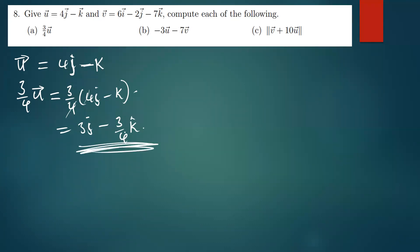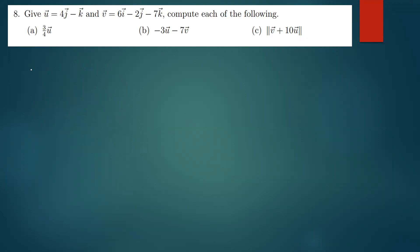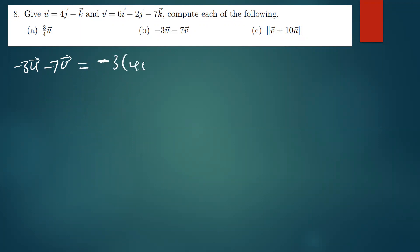Let's move on to the next part, which is (b). This is asking us to compute negative 3u minus 7v. We write this as negative 3 times (4j minus k) minus 7 times v, where v equals 6i minus 2j minus 7k.